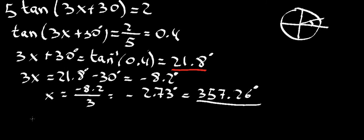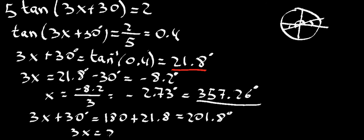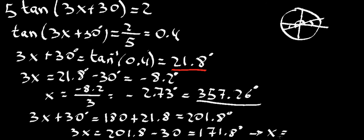There's going to be another angle that has the same tan. The tan repeats from the first quadrant into the third quadrant, so the angle in there is going to have the same tan. That means 3x plus 30 is also equal to 180 plus 21.8, which is 201.8. That means 3x equals 201.8 minus 30, which is 171.8. Dividing by 3, we get 57.26 as our second angle.